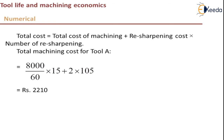The total cost for Tool A equals machining cost plus resharpening cost. Converting 8,000 minutes to hours gives 8000/60 hours. At 15 rupees per hour machining cost, the total machining cost plus resharpening cost comes to 2,210 rupees.